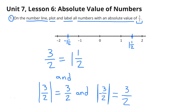Number 1. On the number line, plot and label all numbers with an absolute value of 3 halves. 3 halves is the same as 1 and a half. The absolute value of negative 1 and a half is 1 and a half, because it's 1 and a half units from 0. And the absolute value of positive 1 and a half is 1 and a half, because it's 1 and a half units away from 0.